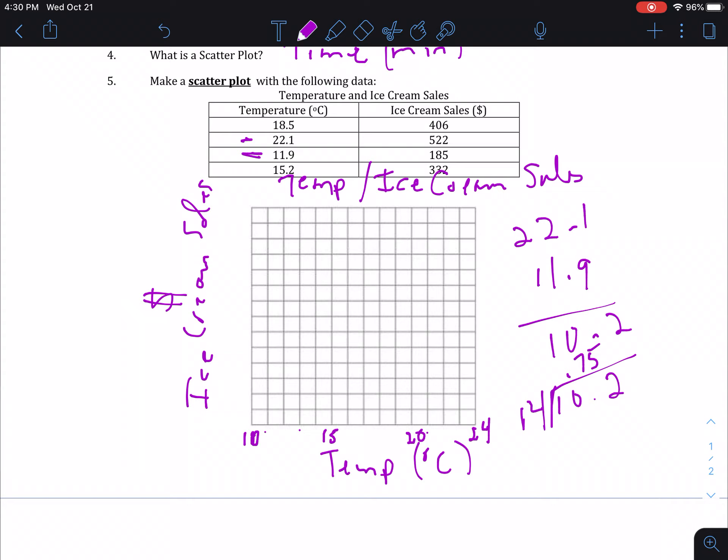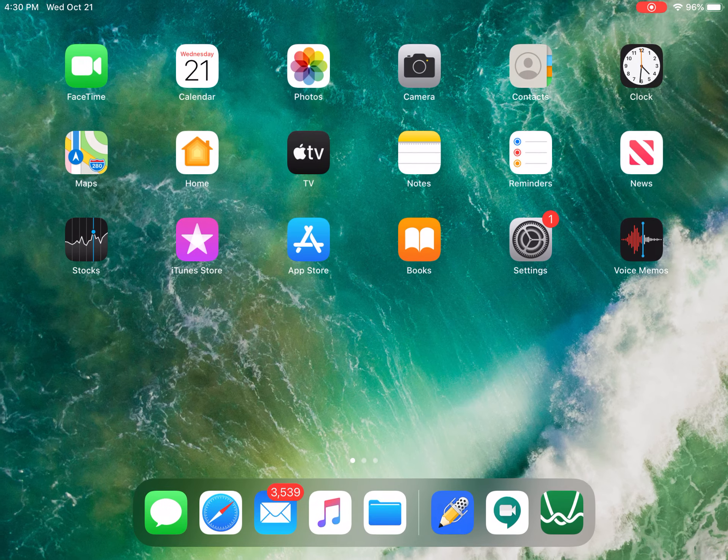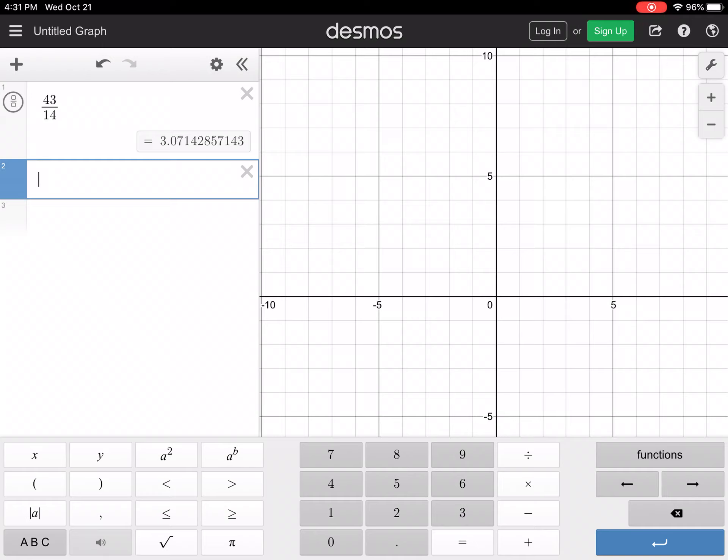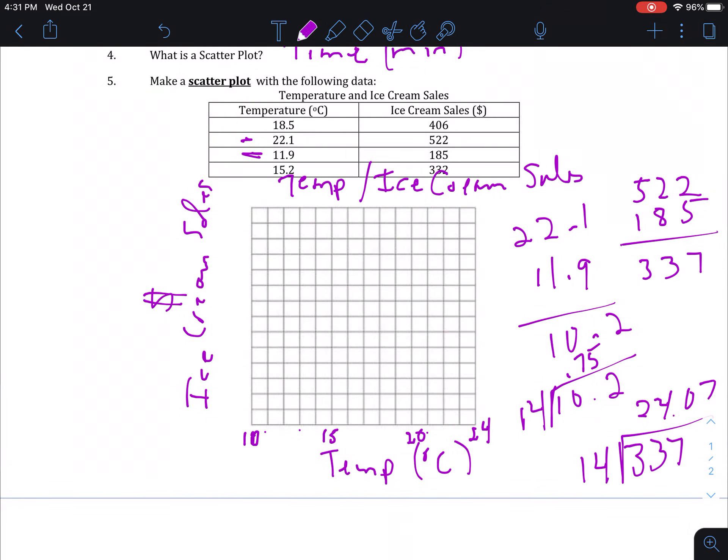How about for the ice cream sales? Our highest dollar amount for ice cream sales is 522, our lowest is 185. Subtract the two and we get 337. Now remember we have to have 337 dollars divided evenly using the 14 squares on the vertical axis. So we're going to go 337 divided by 14 and we're going to get 24.07. So we need to have at least 24.07. Actually works pretty good. Let's go with 25. Each line will represent 25.